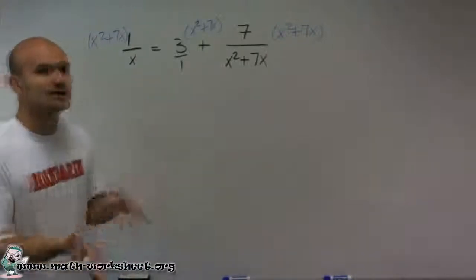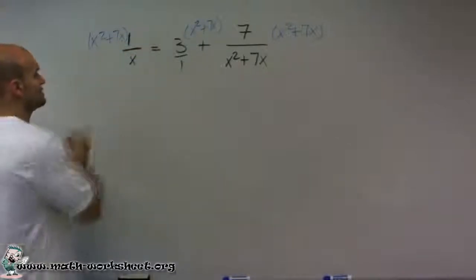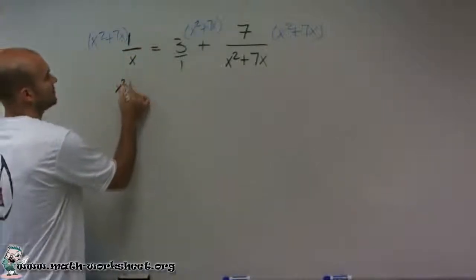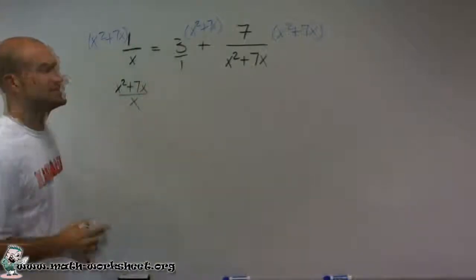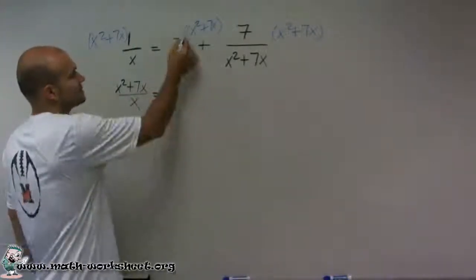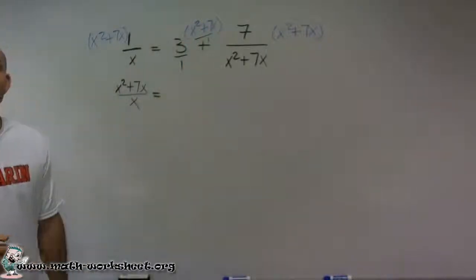So now let's just work from left to right. So I have x squared plus 7x times 1 is obviously just going to leave me with x squared plus 7x. And I'll keep this down there, and I'll do this again, divided by x equals. Now I can put, remember this is as your numerator. This is like x squared plus 7x over 1.